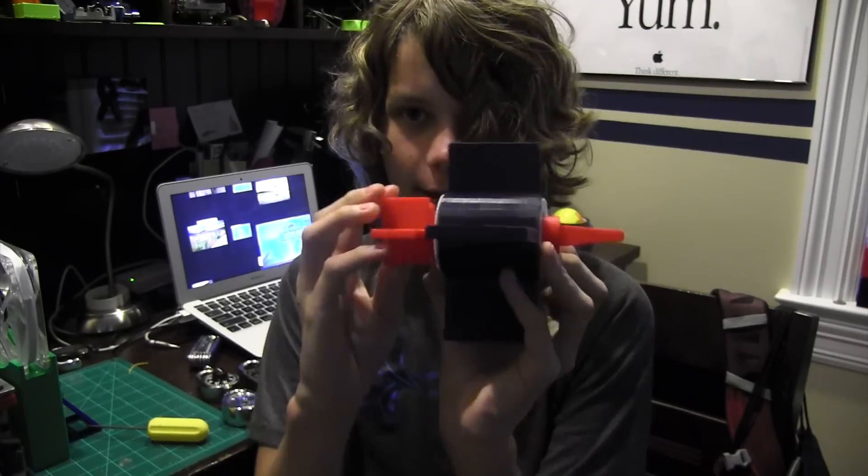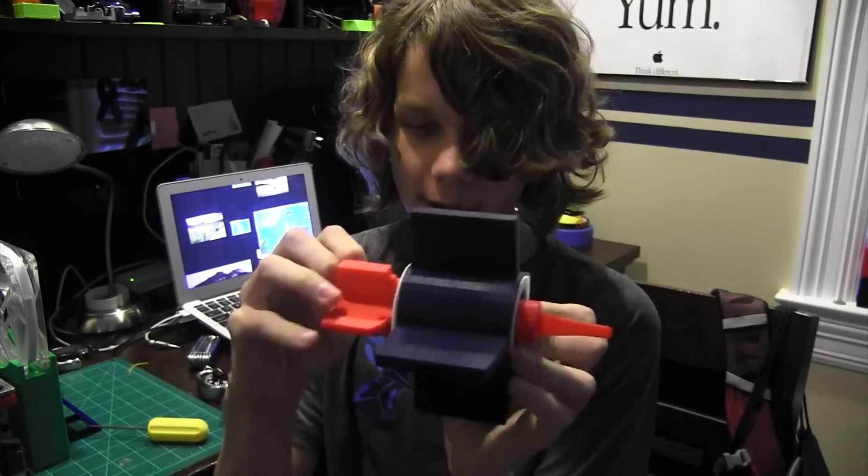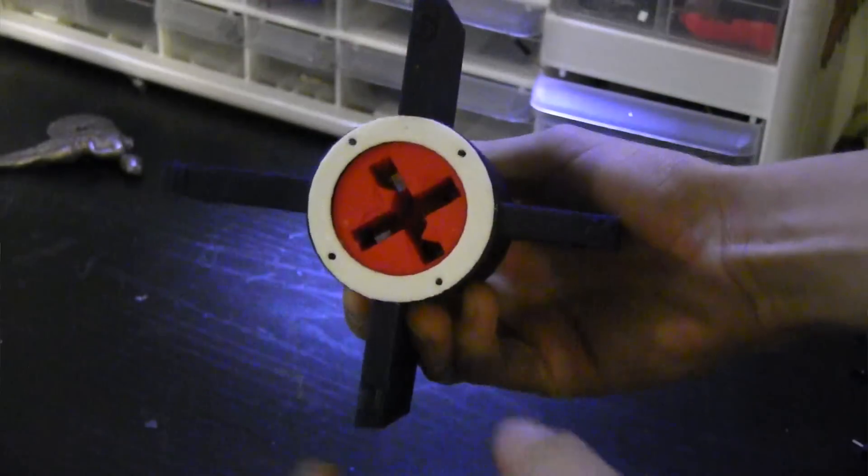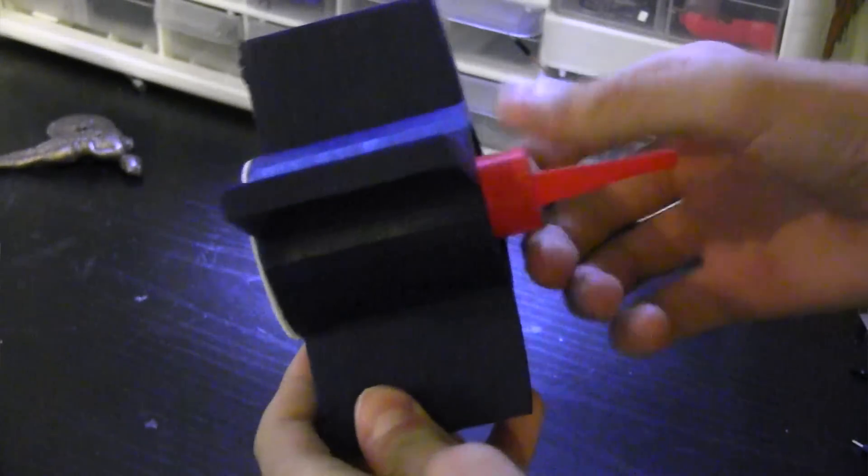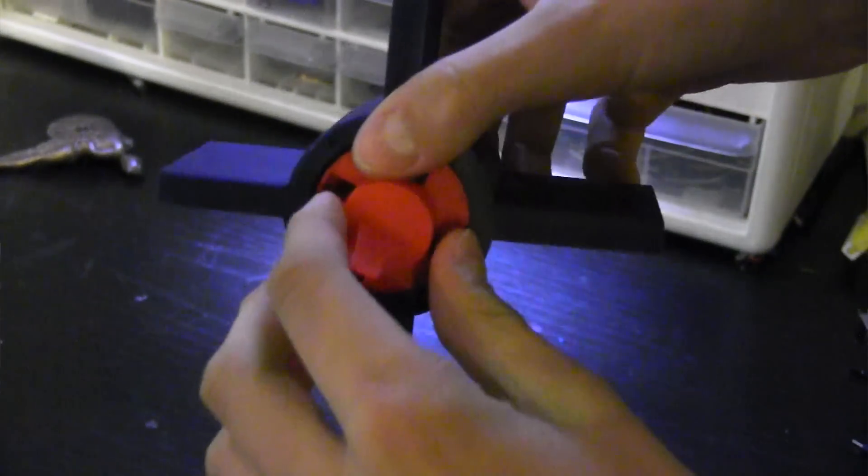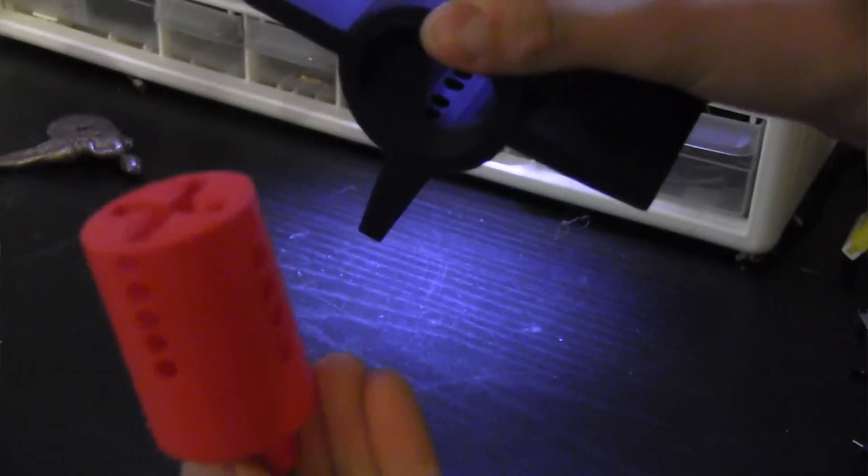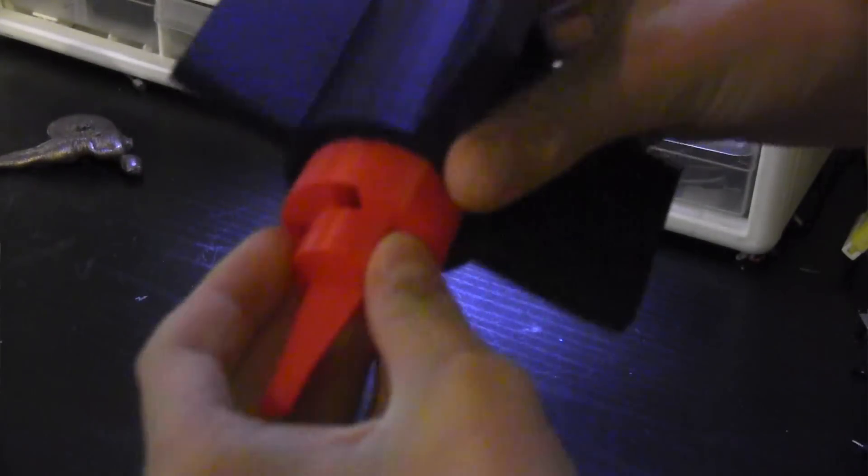This was my last prototype, and as you can see, the key is already inside. It slides in. I have the new barrel right there, and I also have a cap at the end. This was my final prototype, and this actually worked. Now I just need to print a smaller version and see if that works.